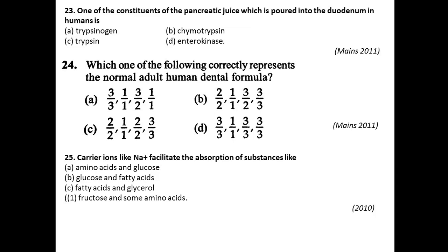Question twenty-four: Which one of the following correctly represents the normal adult human dental formula? The human dental formula contains 2123/2123. So option C is right for this question.